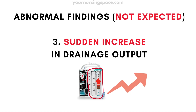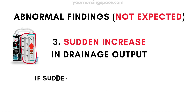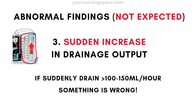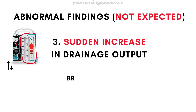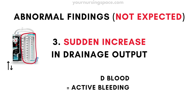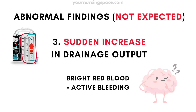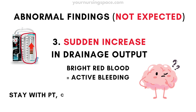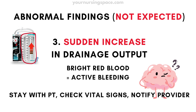Sudden increase in drainage output: if the patient suddenly starts draining more than 100 to 150 milliliters per hour, something is wrong. Bright red, fresh blood means there might be active bleeding. Stay with the patient, check their vital signs, and call the provider immediately.